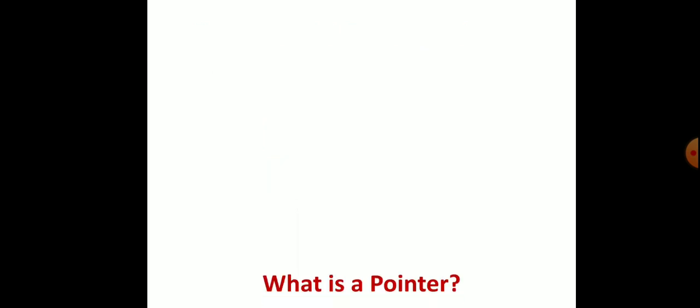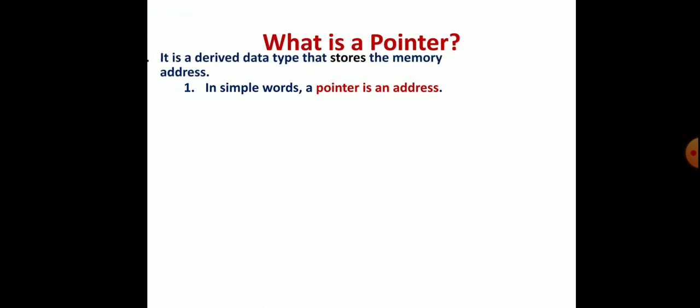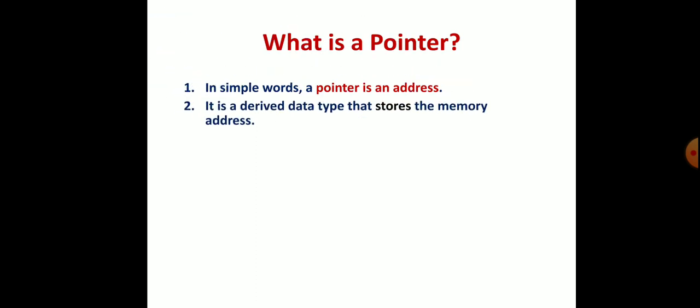What is a pointer? This is a common question not only for embedded C, but also for C, C++, or Java. A pointer is basic stuff that you have to understand in any programming language. In simple words, a pointer is just an address. For example, if someone asks where is your home, you'll tell the address. The same way, a pointer is an address. It will point to exactly the variable you're asking for. It is a derived data type that stores the memory address.